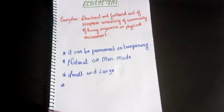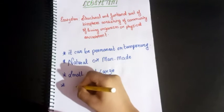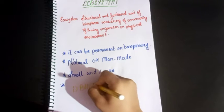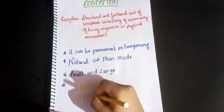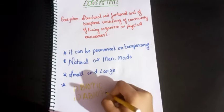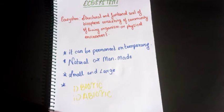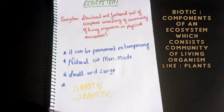Now let's see some of the components of an ecosystem. An ecosystem has two components: one is biotic and the second one is abiotic. These two components are different from each other.